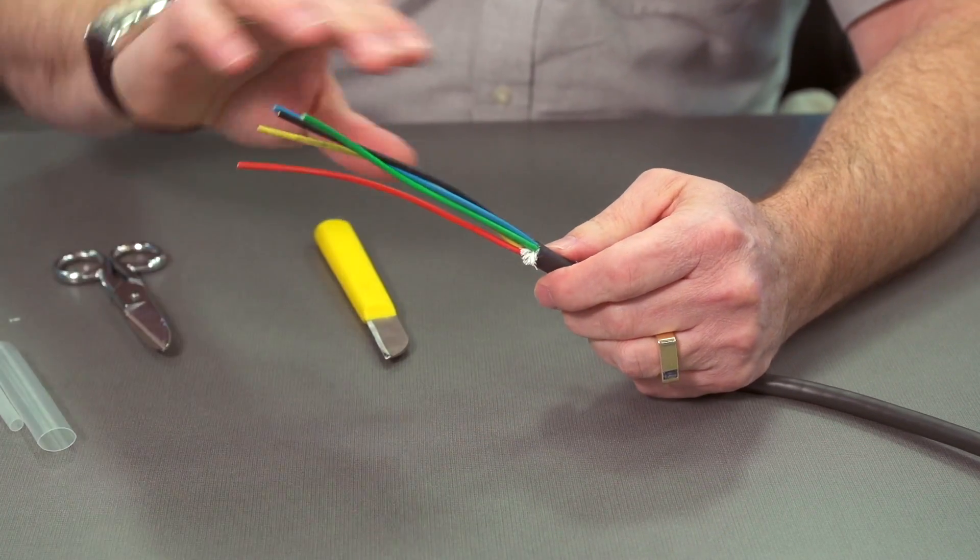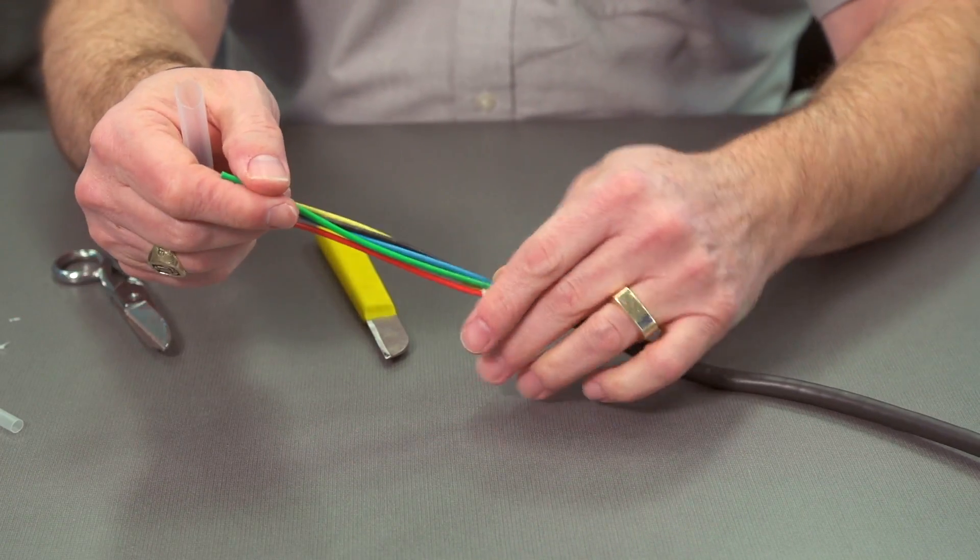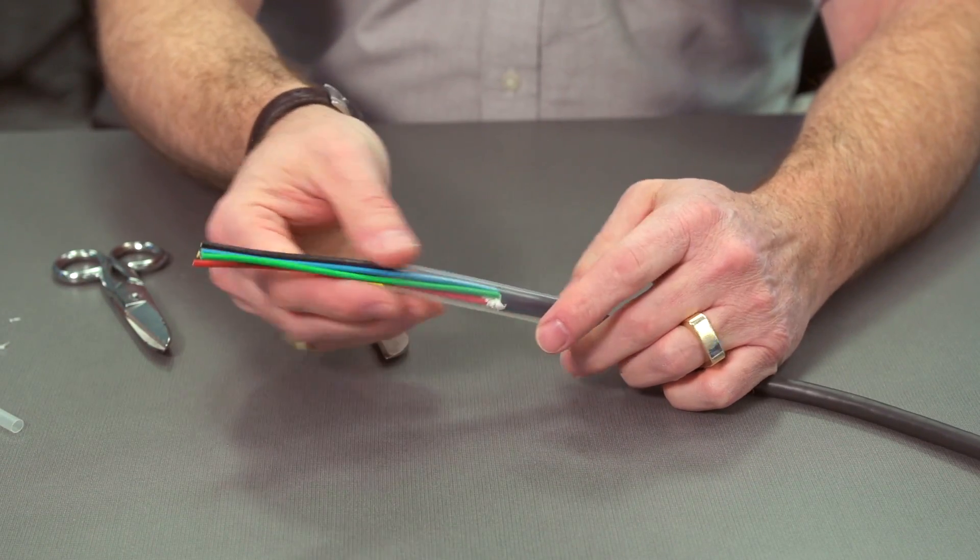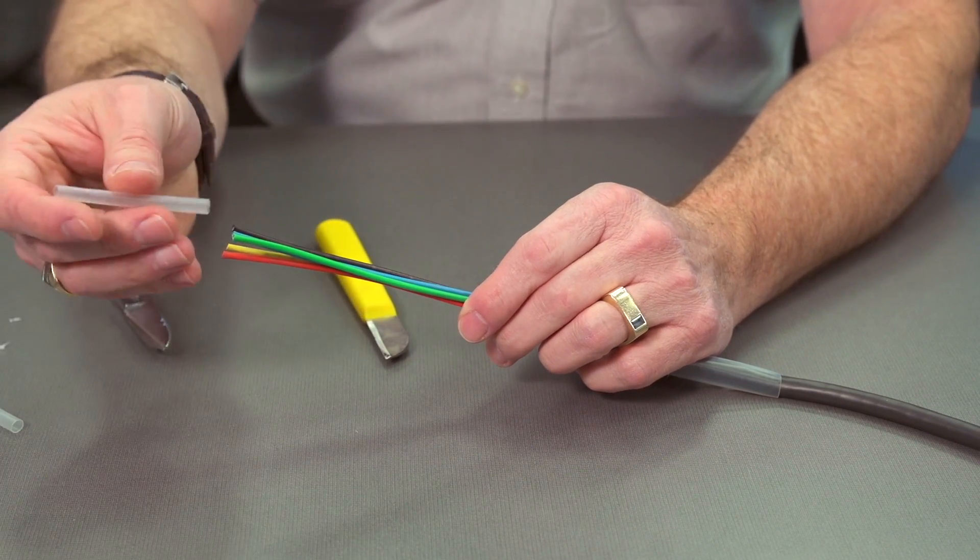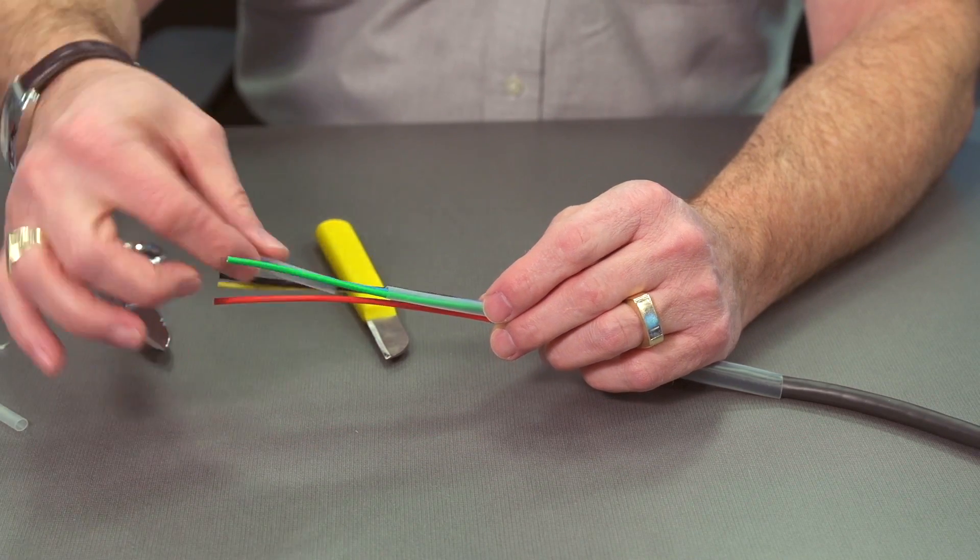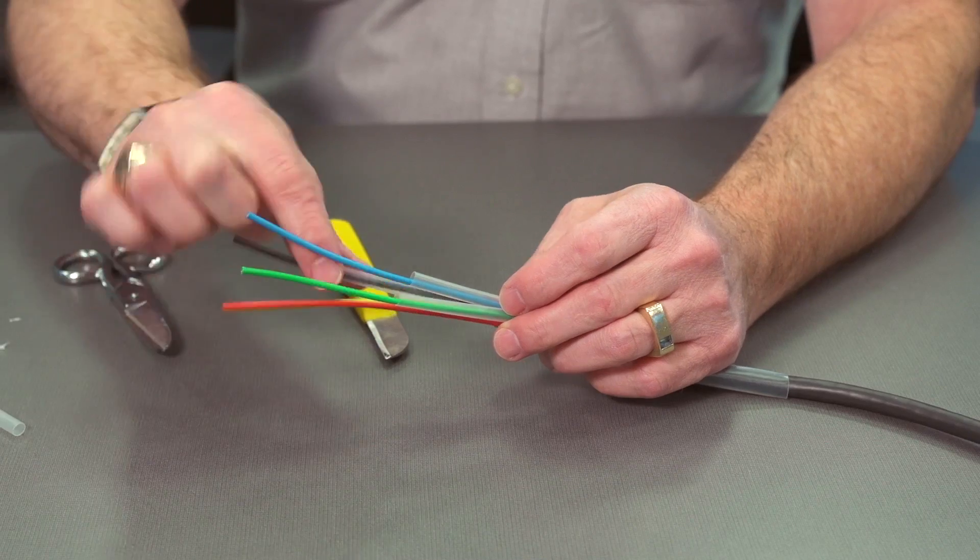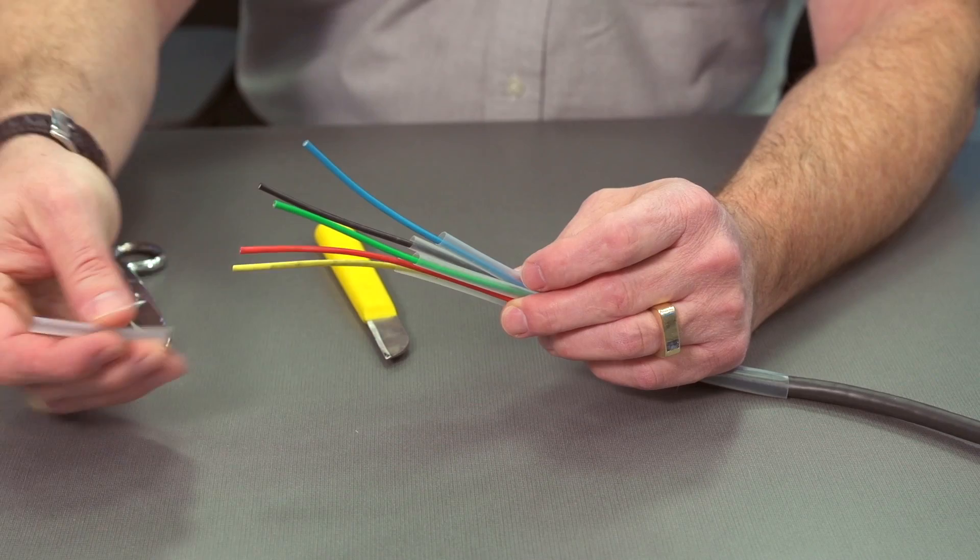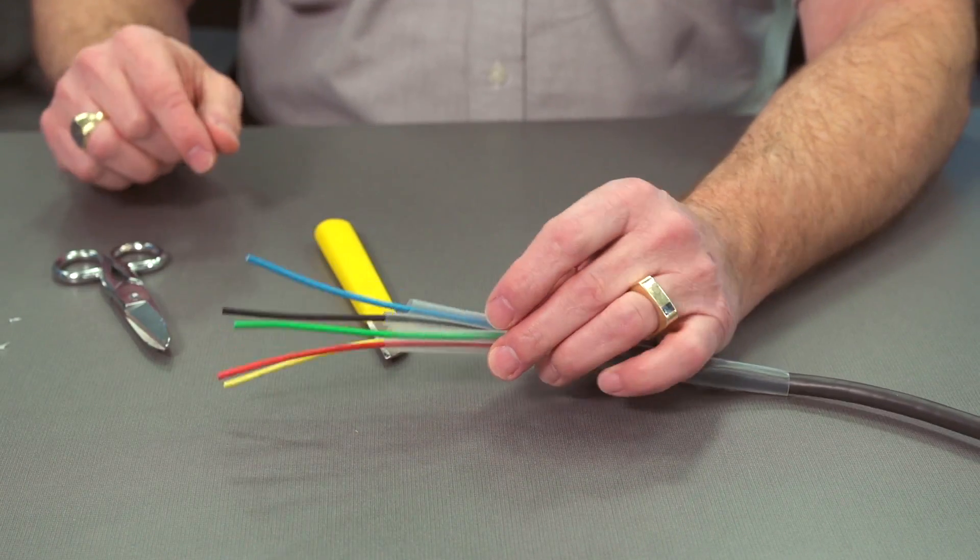And then we want to put some heat shrink on right away, and this is going to go around all five coaxes. They'll be there, and then also we're going to use some heat shrink for each of the B&Cs. So put a piece for the red, green, blue, H and V, and it's a good idea to get all of this on right away. Nothing worse than getting your connector finished and finding out you forgot to put something in.